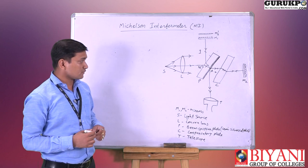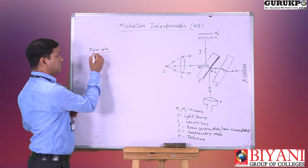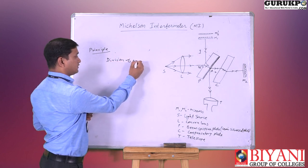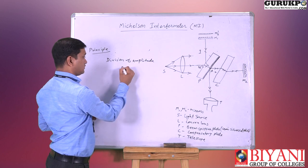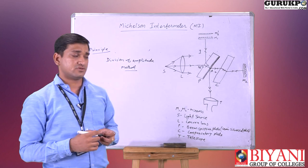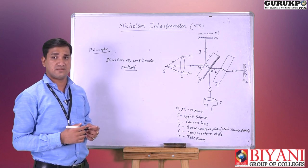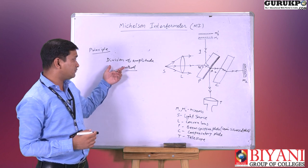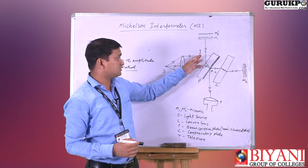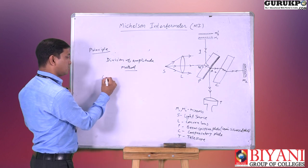The interference fringes are observed in the telescope T. The principle of this interferometer is based on the division of amplitude method. We know that a coherent source is required for interference, and there are two different methods: division of wavefront and division of amplitude. This is an example of the division of amplitude method, in which the ray is partially reflected and partially transmitted — these two rays are known as coherent sources.